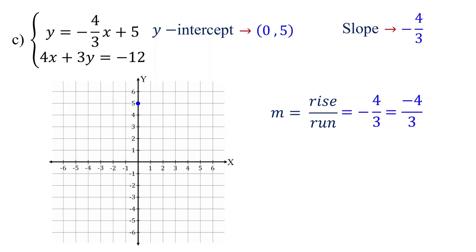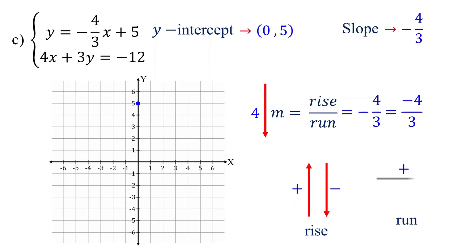The key concept to remember is that when the rise is positive, we move up, and when it is negative, we move down. In this case, since the rise is negative 4, we move 4 units down. Similarly, when the run is positive, we go to the right, and when it is negative, we go to the left. In this case, the run is positive 3, so we go 3 units to the right.